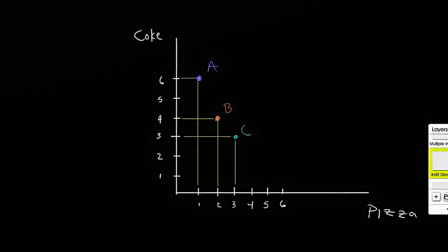And then maybe to get the next piece of pizza, I'm only willing to give up about half a coke. So this would be bundle D. And then just one more for completeness here, maybe to get the next piece of pizza I'm only willing to give up one quarter of a coke to get that, and we'll call this bundle E.